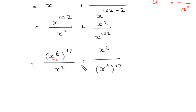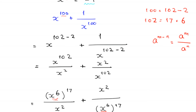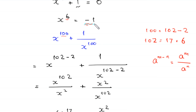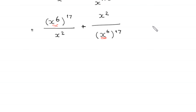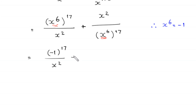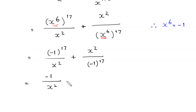Now we replace x to the power 6 with its value, negative 1. Since x to the power 6 equals negative 1, this becomes negative 1 to the power 17, divided by x squared, plus x squared divided by negative 1 to the power 17. Because we have an odd power of negative 1, negative 1 to the power 17 remains negative 1.